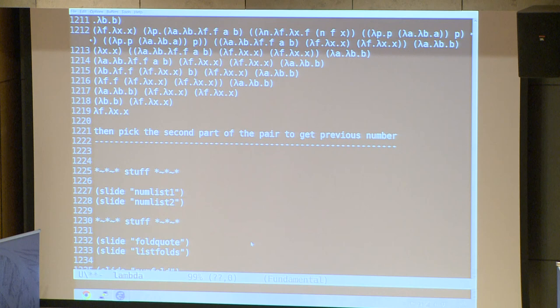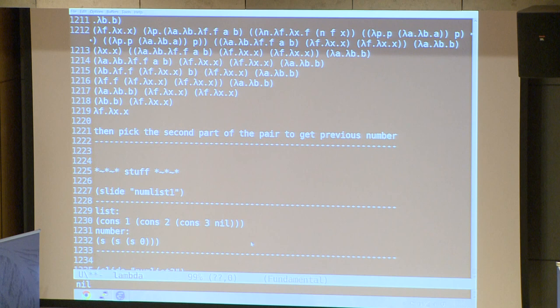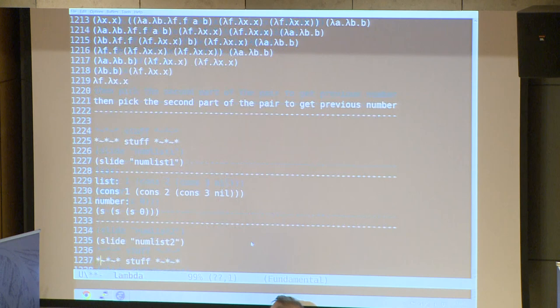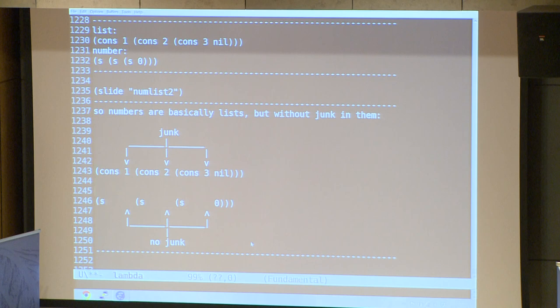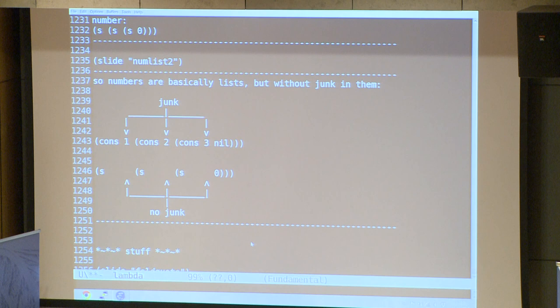Now we have booleans, numbers, and arithmetic. Division is left as an exercise for the reader. What else can we do? We have some stuff on lists. Lists are a lot like numbers — they have the same structure, but with list elements to keep hold of. Cons is kind of like successor, and the nil empty list is kind of like zero. Numbers are lists without junk in them — a number has just a count of things.